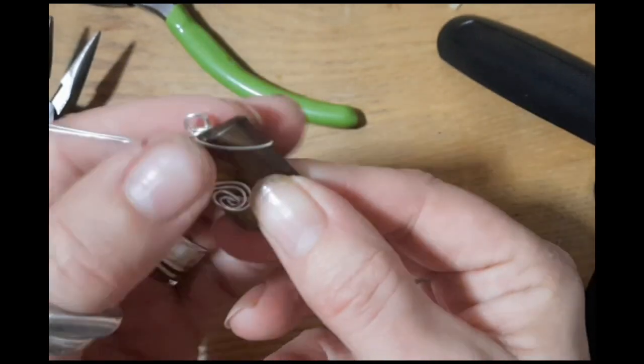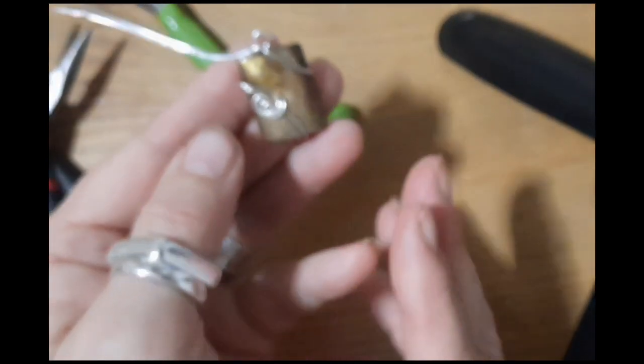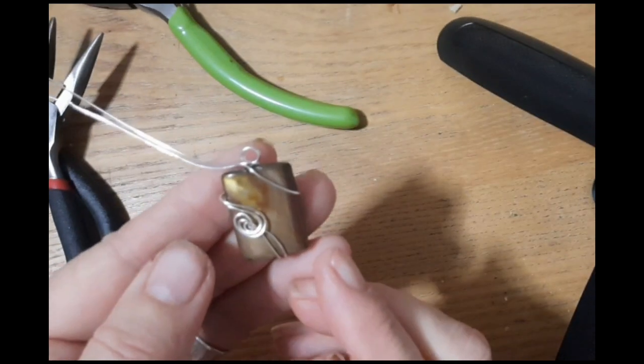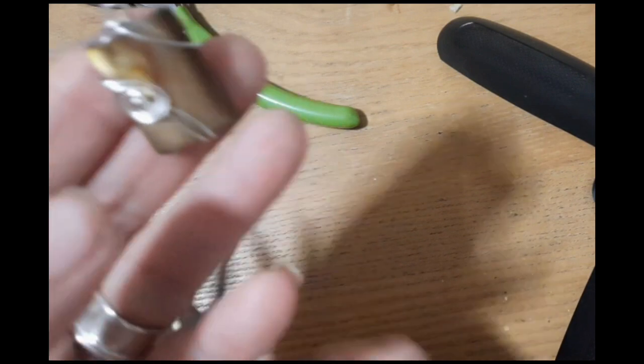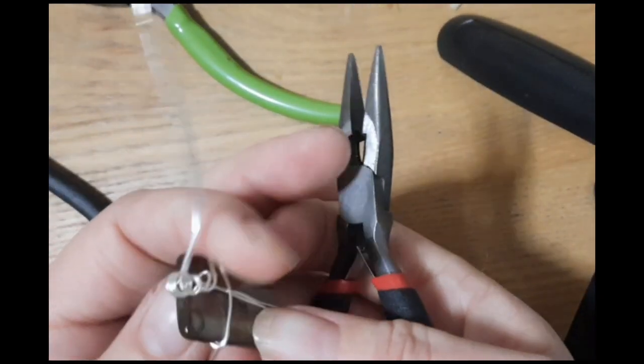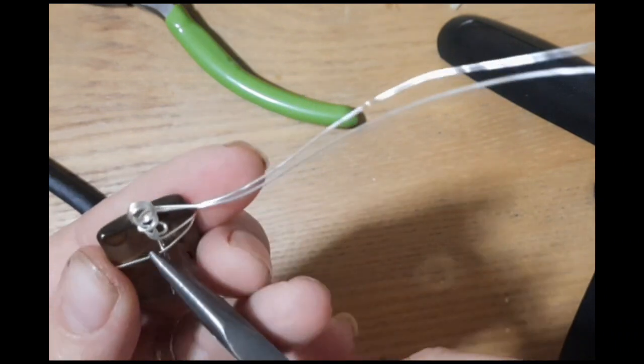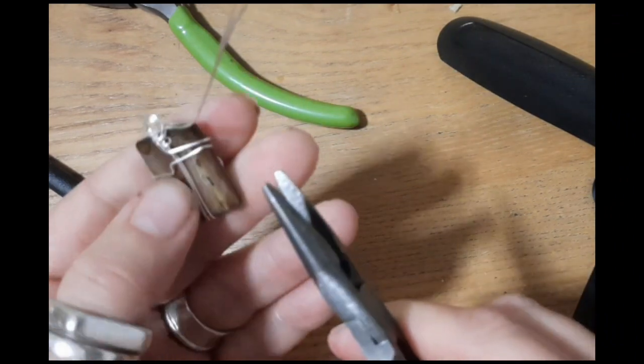At this stage, because I've got quite a bit of wire left, I'll go in and tighten the wire around the shell. With this, you get your flat nose pliers, and I start at the back. You can just tighten the wire around the pendant.